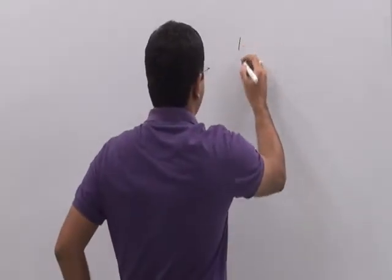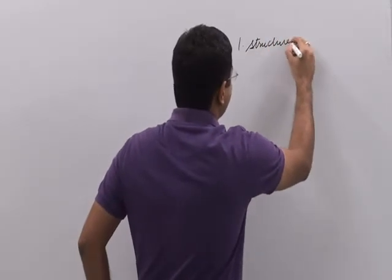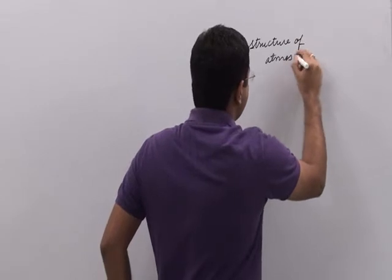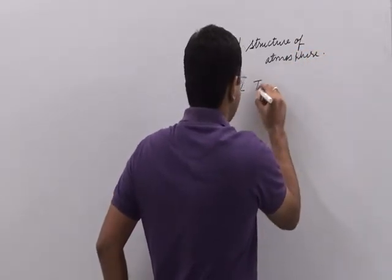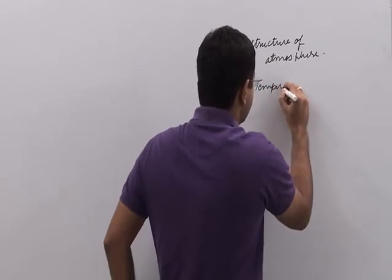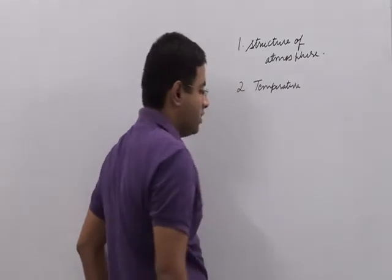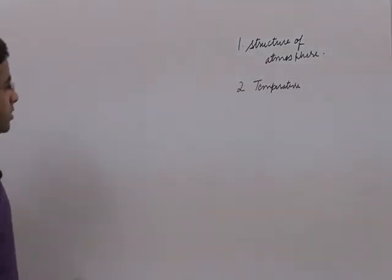So in this class we will cover two things: first, we will cover structure of atmosphere, and second, we will be discussing about the temperature on the surface of earth and what are the factors that are influencing the distribution of temperature on the earth's surface.